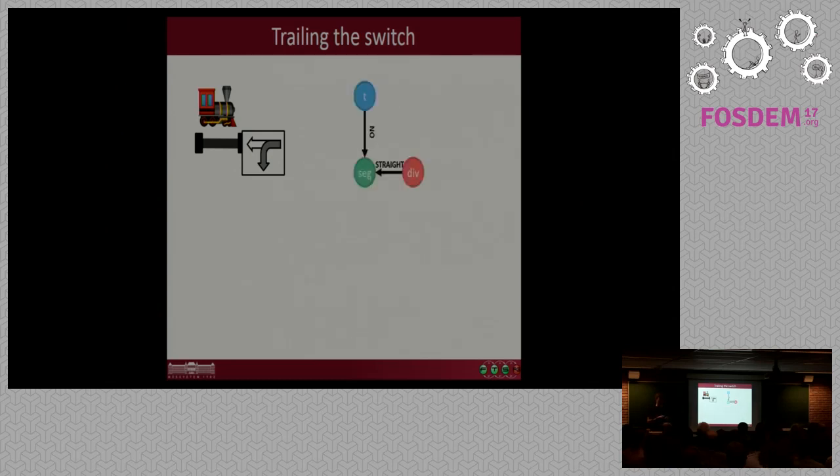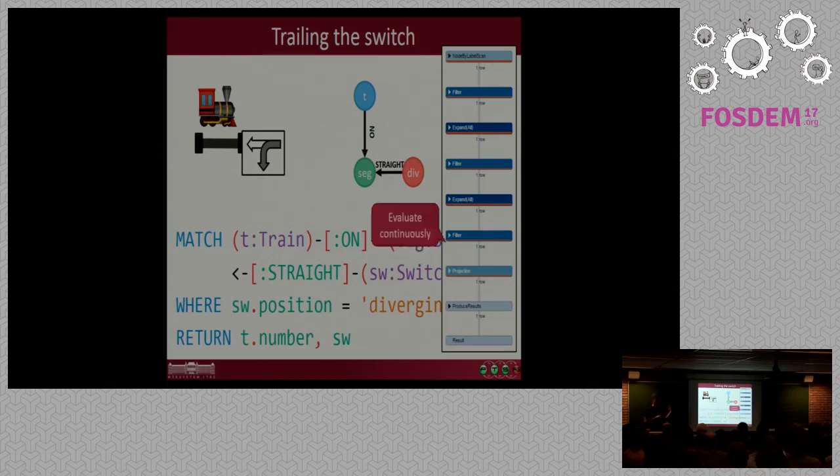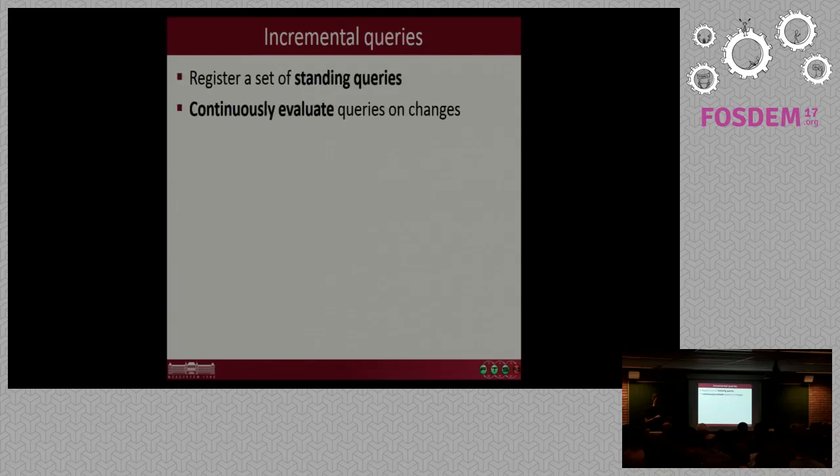So for trailing the switch we have another constraint. It looks like this: we have a train which is on a segment which comes straight from a switch but the switch is set to a diverging position. So this is something that we would like to avoid and then we would like to warn the users. Neo4j is also capable of running this pretty efficiently. However, in such a system we need to evaluate such queries continuously. So we need to run these queries over and over and over again. And this is basically the idea of incremental graph queries. We register a set of so-called standing queries in the system and we continuously evaluate these queries upon each change in the graph.